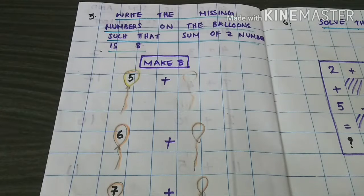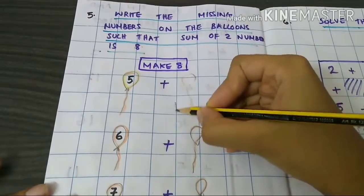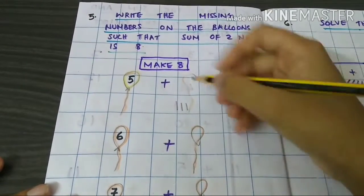Write the missing numbers on the balloons such that sum of two numbers is 8. Make 8. 5 plus 6, 7, 8. So 3.